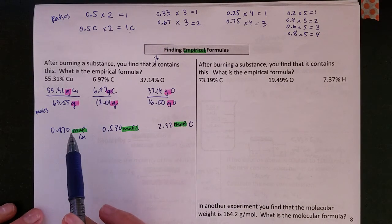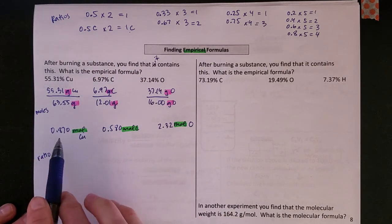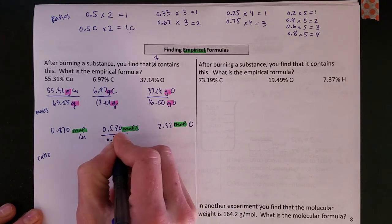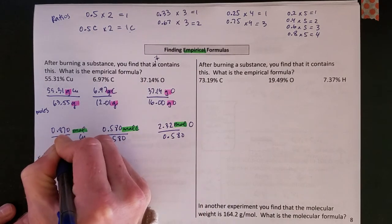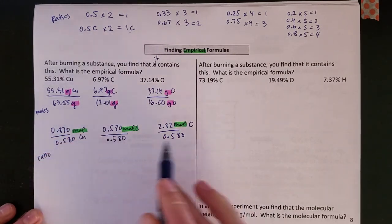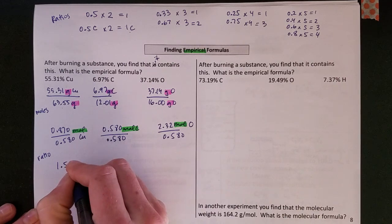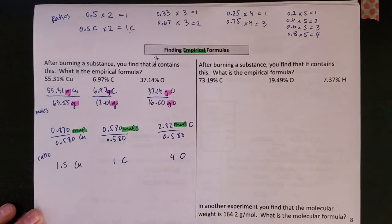So once I've got moles here now I want to find a good ratio, so I take the smallest of these numbers which is the 0.580 and I'm going to divide all of these by 0.580 looking for the ratio of the different elements to each other. And when I do that I get 1.5 coppers, 1 carbon, and 4 oxygens.